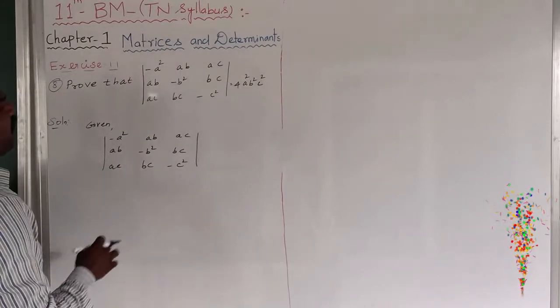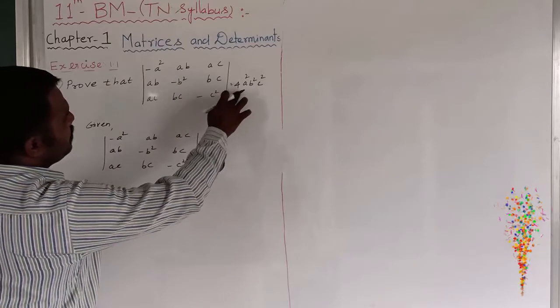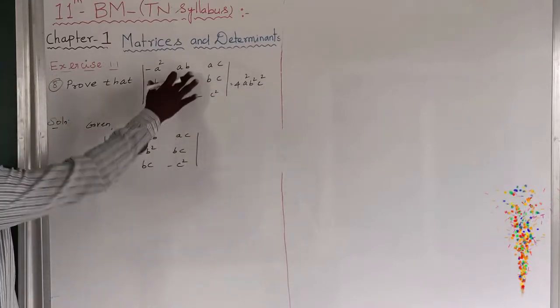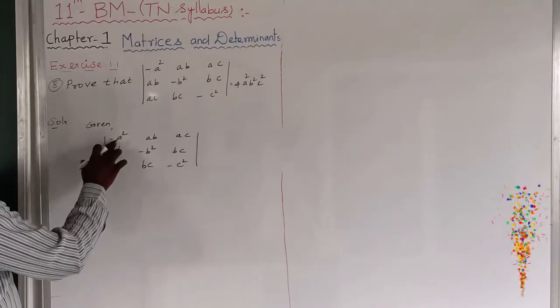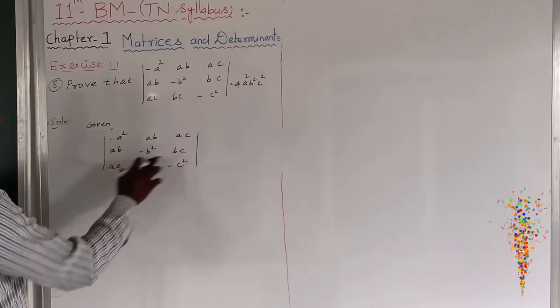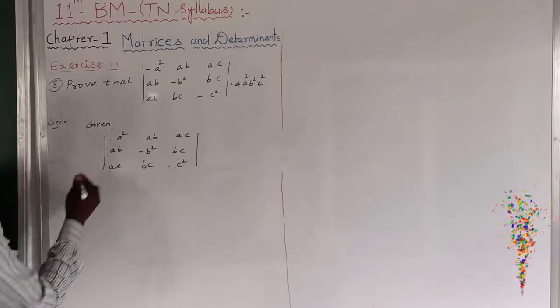To prove that the value of this determinant is 4 a squared b squared c squared, I will take the given determinant: minus a squared, ab, ac; ab, minus b squared, bc; ac, bc, minus c squared.